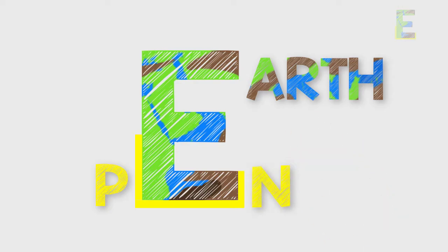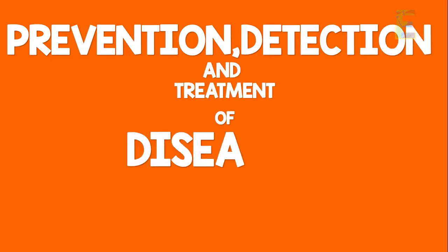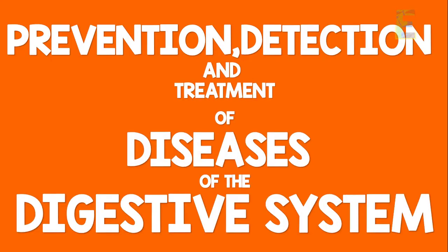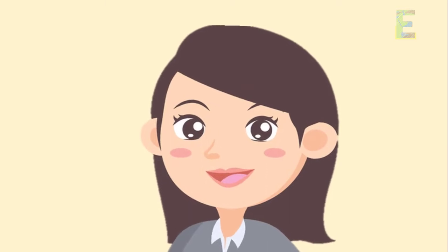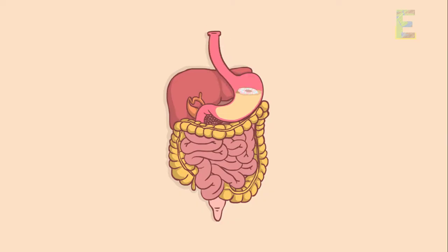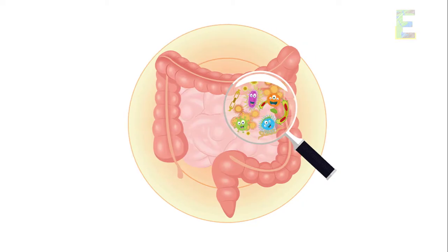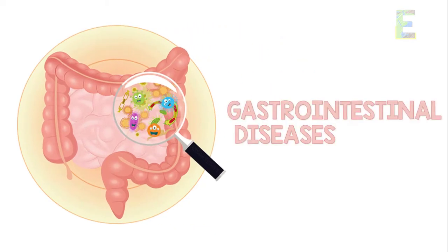Earth Pen. Prevention, detection, and treatment of diseases of the digestive system. Good day learners! This is Earth Pen. Since we are through with the processes that happen in our digestive system, this time we will now educate ourselves about the different diseases that could occur in our digestive system, known as the gastrointestinal diseases.